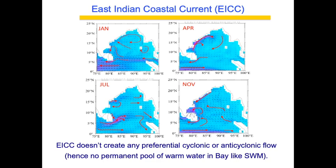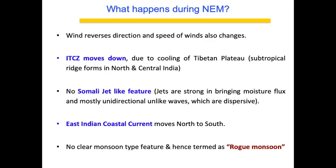During Northeast monsoon, EICC is not clean as it was during Southwest monsoon. The problem is you cannot pinpoint a single clean feature confirming that the monsoon will perform well, whereas for Southwest monsoon you have multiple clear features — Somali jet, EICC, and wind patterns creating cyclonic circulations. During Northeast monsoon, winds reverse and slow down, reducing moisture flux. ITCZ moves south, there is no Somali jet-like feature — only dispersive waves.